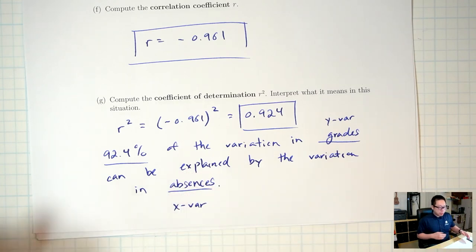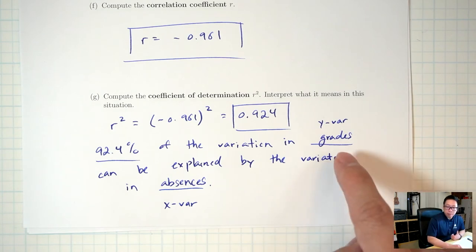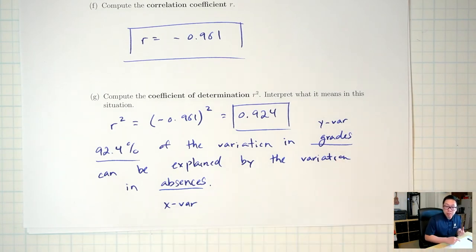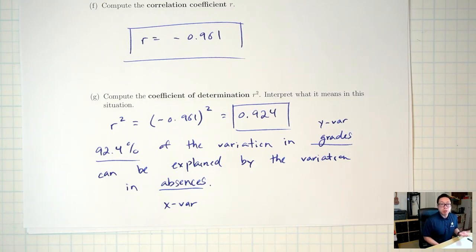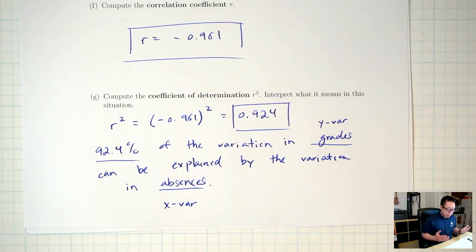There are many things that can affect a student's grade beyond absences — how much the student works, the quality of the instructor, etc. But the R² of 92.4% tells us that absences account for 92.4% of the variation in grades.